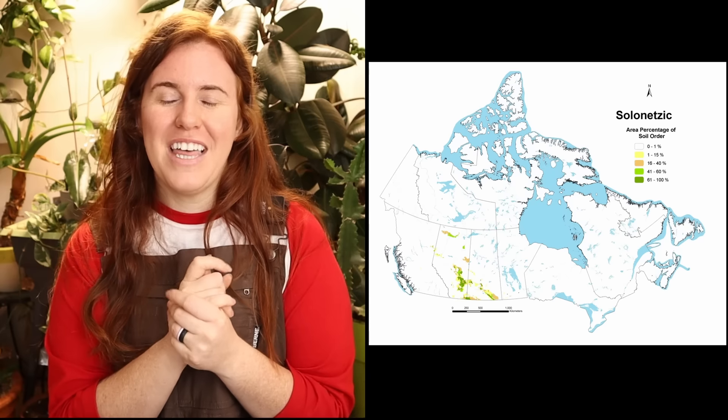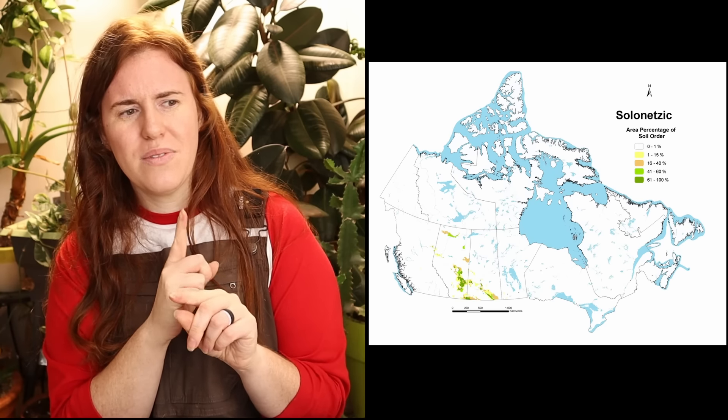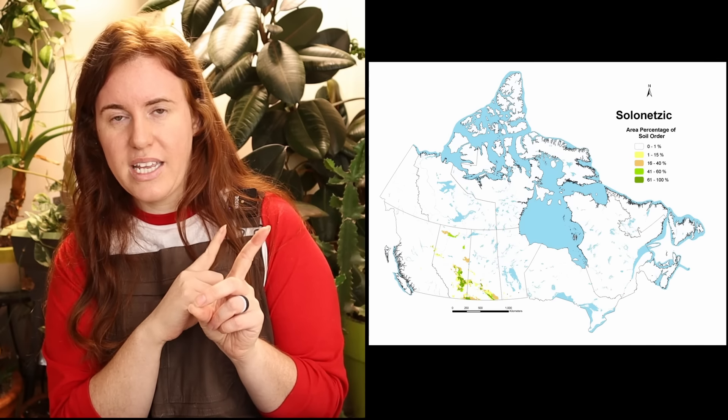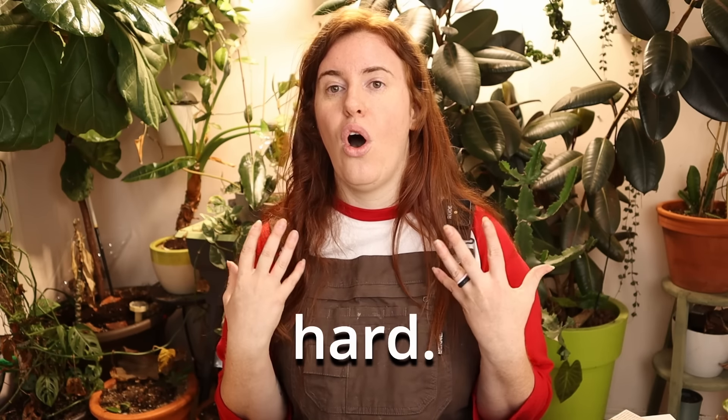If you are in one of those areas, go digging, because you don't want to find out the hard way. Solonetzic soils are found in the brown and dark brown soil zones — I did a video on soil zones so you can check that out. I've seen solonetzic soil naturally in a grassland setting and it is literal cement. It's naturally occurring — mother nature made it — and there's not much we can do because the solonetzic layer in the lower profile tends to be quite large. Nothing's going to fix that one; you just want to move your garden.